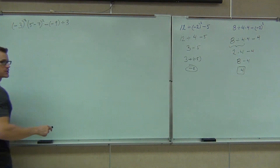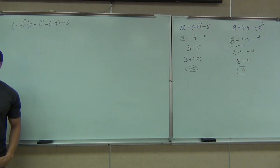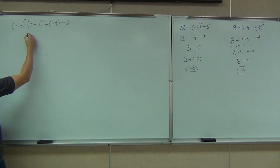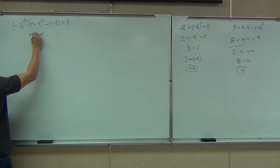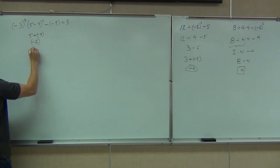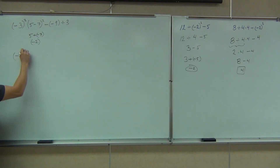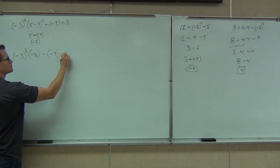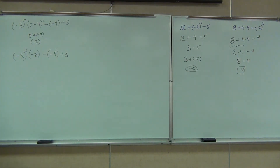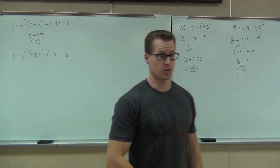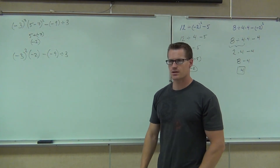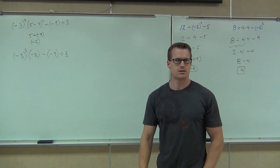Okay, so let's keep going on this problem. First thing to do, we're going to look for any parentheses. I see some inside of our parentheses. We can do the 5 plus negative 7 — we have negative 2 out of that. So we'll have negative 3 squared minus 2, minus negative 9 divided by 3. We did the negative 2 in there. What's the next thing that we're going to do? You're going to bring down the exponent — don't you bring the exponent with it?